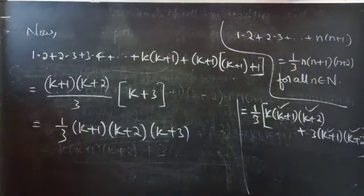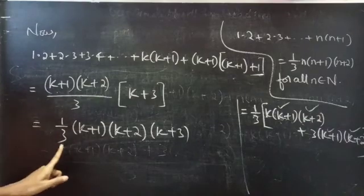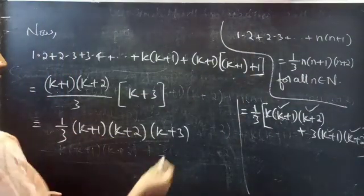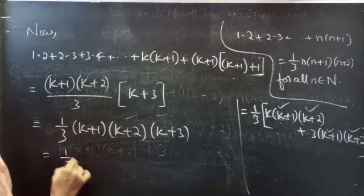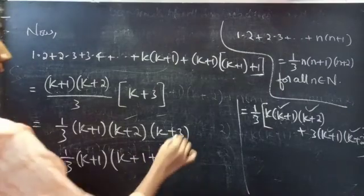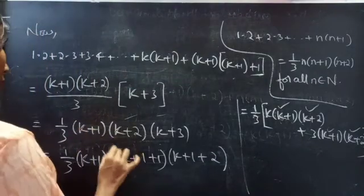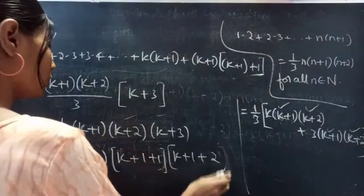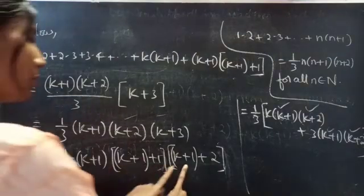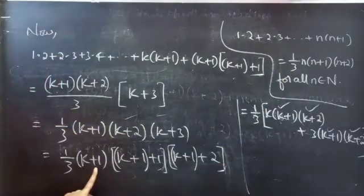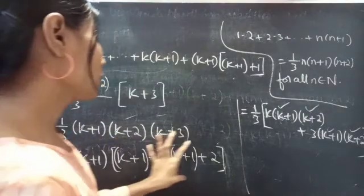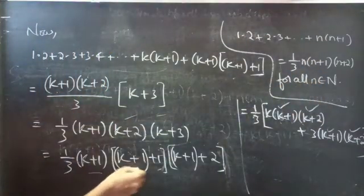Now we write everything in terms of K+1. Let n = K+1, so K+2 = n+1 and K+3 = n+2. This gives (1/3)·n·(n+1)·(n+2), which is exactly the RHS for n = K+1. So P(n) is true for n = K+1.